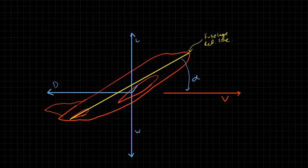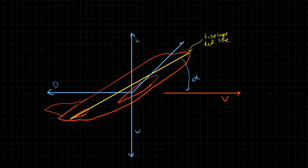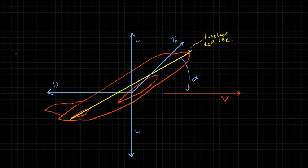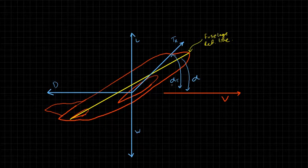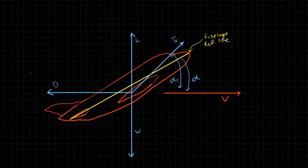Now let's address the thrust. The thrust is generally aligned with the fuselage reference line. We'll call it T sub r, and the angle from the thrust vector to the velocity vector is known as the thrust angle, or alpha sub t. Generally, alpha sub t is very small, and we'll use that approximation later on.